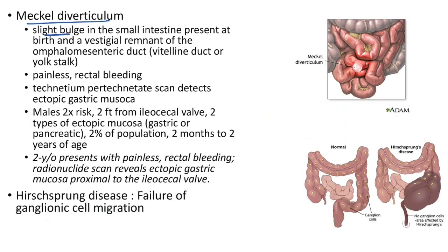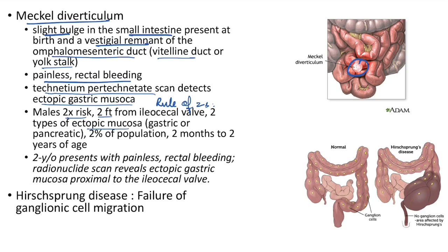Meckel's diverticulum: a slight bulge in small intestine present at birth; vestigial remnant of omphalomesenteric (vitelline) duct. Presents with painless rectal bleeding. Diagnosed using technetium pertechnetate scan detecting ectopic gastric mucosa. Rule of 2's: 2× higher risk in males, 2 feet from ileocecal valve, 2 types of ectopic mucosa (gastric or pancreatic), affects 2% of population, children 2 months to 2 years. Case: 2-year-old with painless rectal bleeding; radionuclide scan reveals ectopic gastric mucosa.